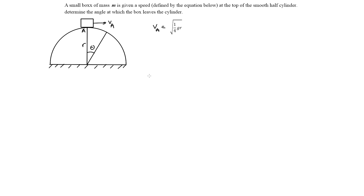In this problem we're going to look at a dynamics problem that deals with the work-energy principle as well as how normal forces act on a given object. The problem states that a small box of mass m is given a speed defined by the equation below at the top of a smooth half cylinder. Determine the angle at which the box leaves the cylinder.